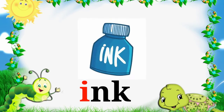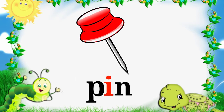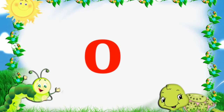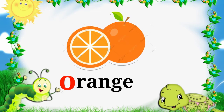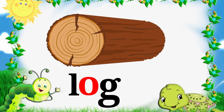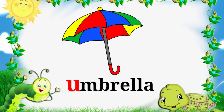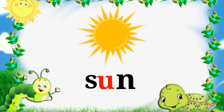The third vowel sound is 'I' as in ink, as in pin. The fourth vowel sound is 'O' as in orange, 'O' as in log. The fifth and last vowel sound is 'U' as in umbrella, as in sun.